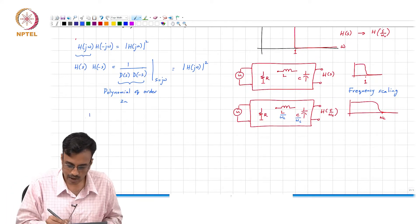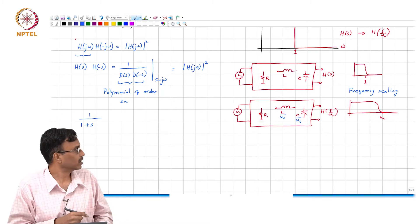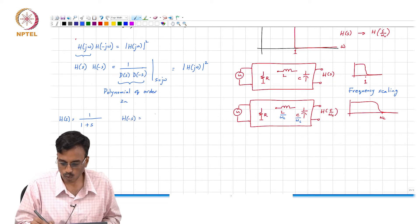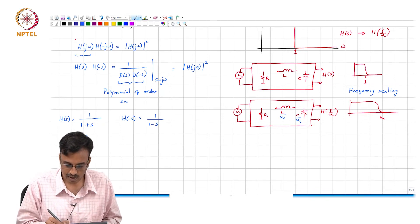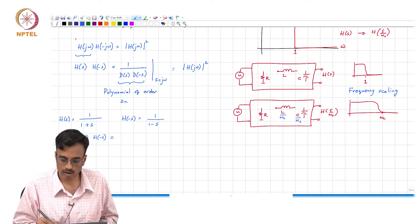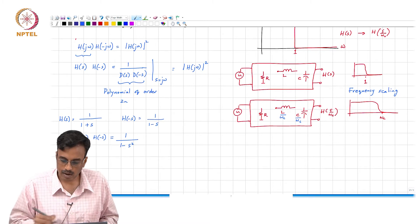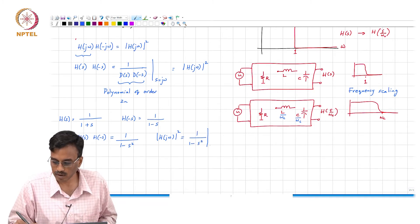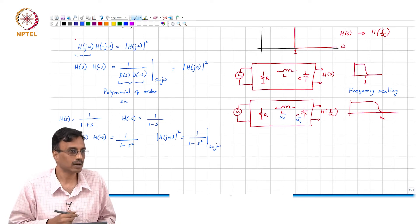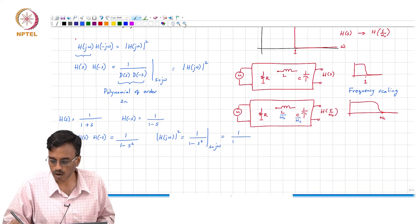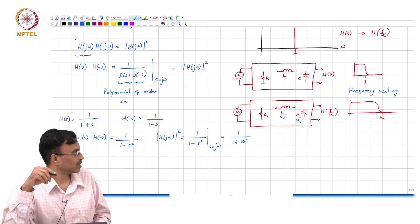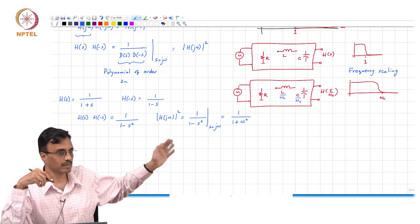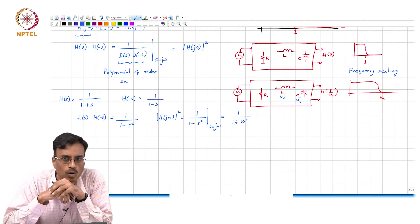For example, let H(s) = 1/(1+s). Then H(−s) = 1/(1−s). So H(s)·H(−s) = 1/(1−s²). Replacing s with jω gives |H(jω)|² = 1/(1+ω²), which we already knew. It is very straightforward to go from H(s) to |H(jω)|².